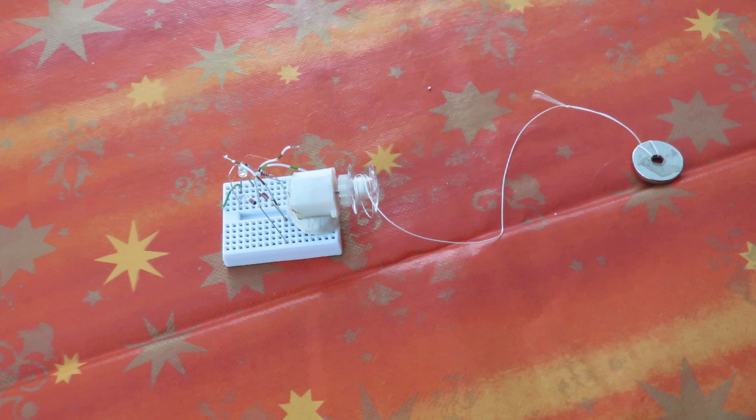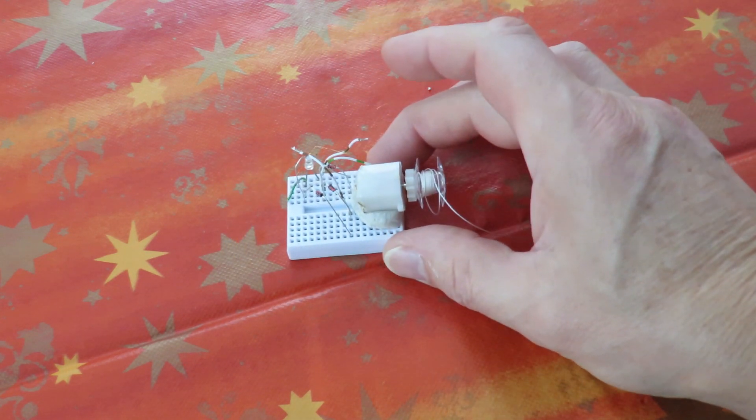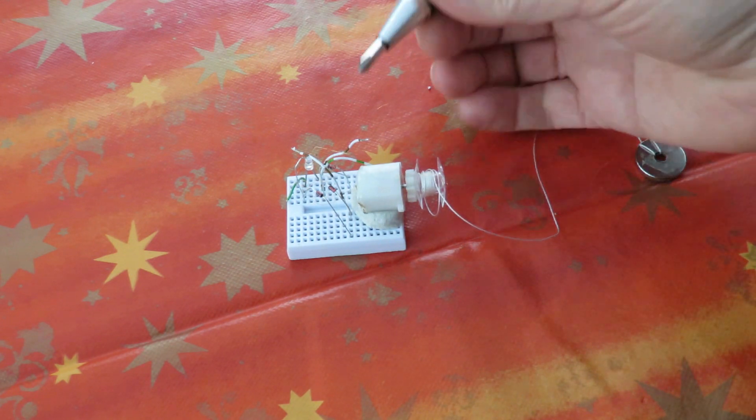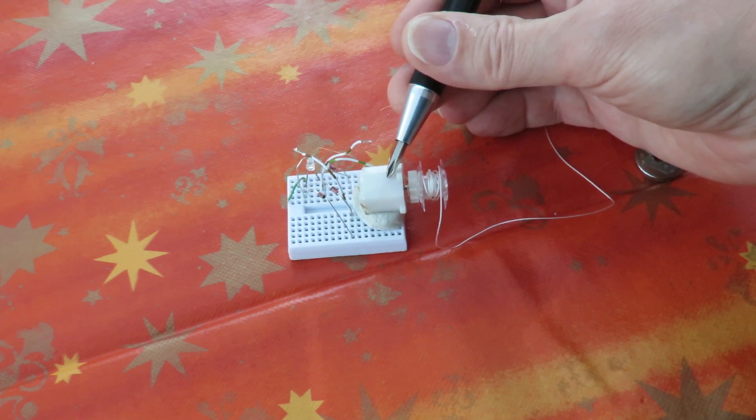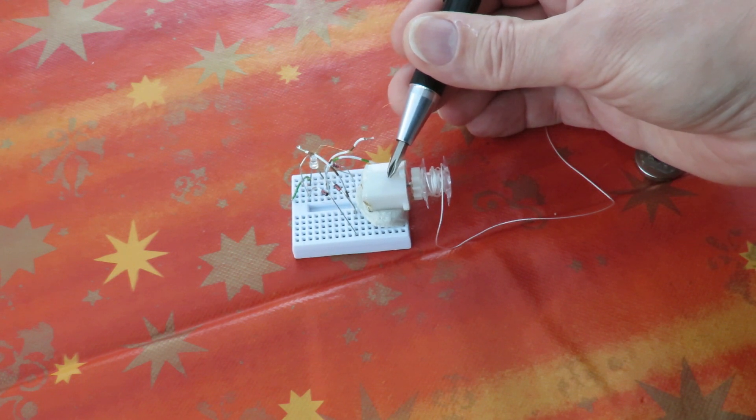Hi guys, another junk pile project. This little module here is the little motor or generator out of a faucet light.